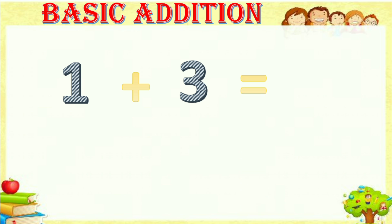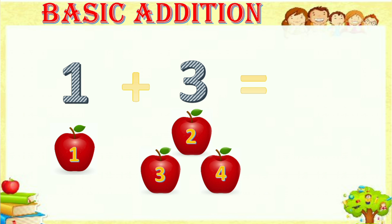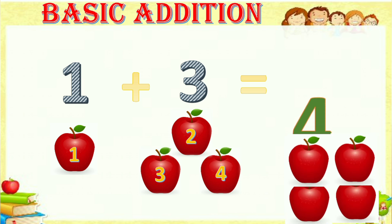Here the number is one plus three equals. For one there is one apple, and for three there are one, two, three — three apples. So totally there are one, two, three and four — the answer is four apples.